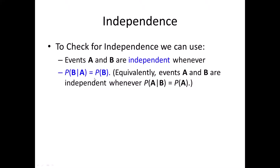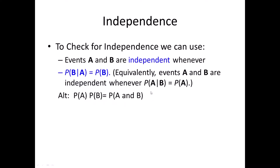There are two ways to show independence: when the conditional probability equals the non-conditional probability, or when you can show that the original multiplication rule formula holds true — that the product P(A) × P(B) equals the joint probability P(A∩B). Either approach works.